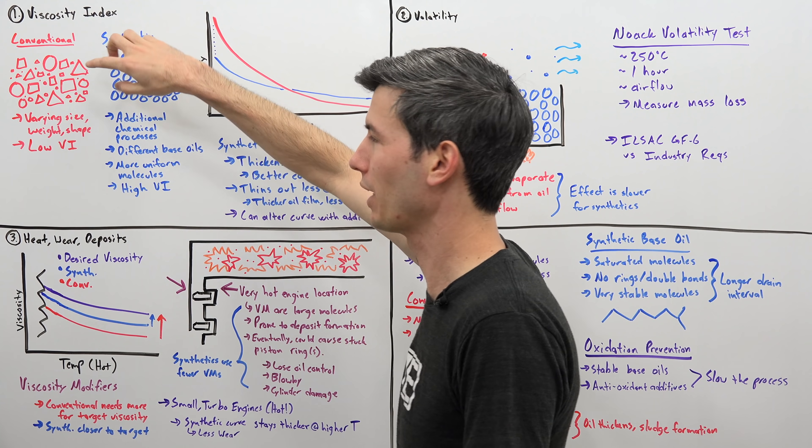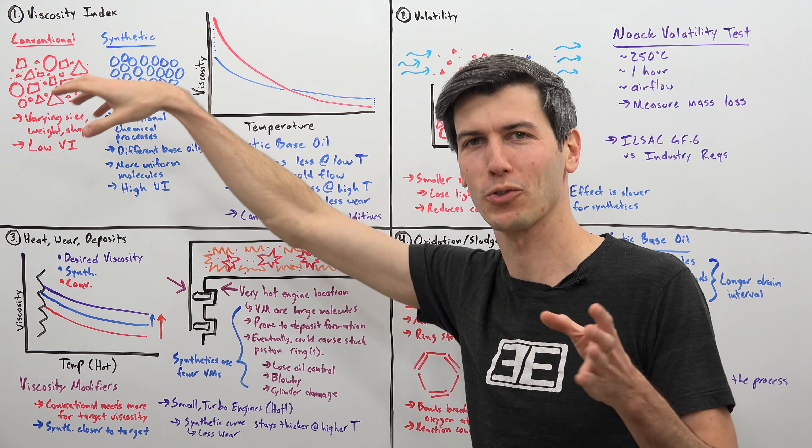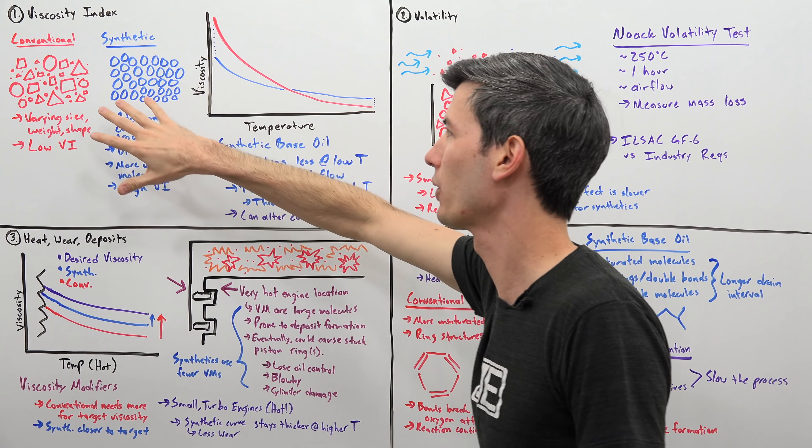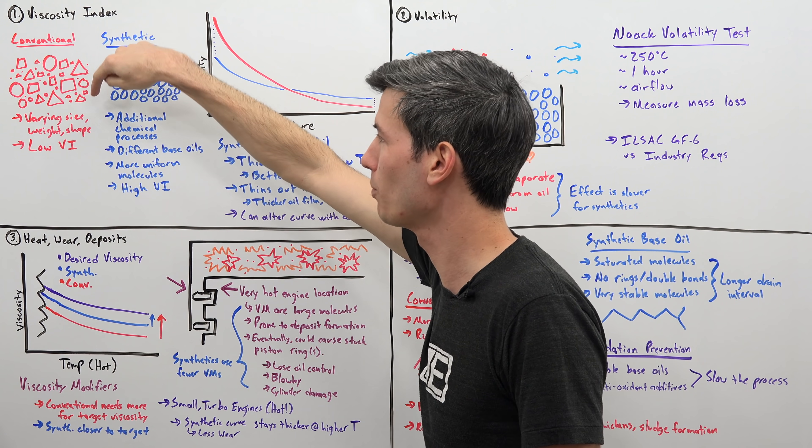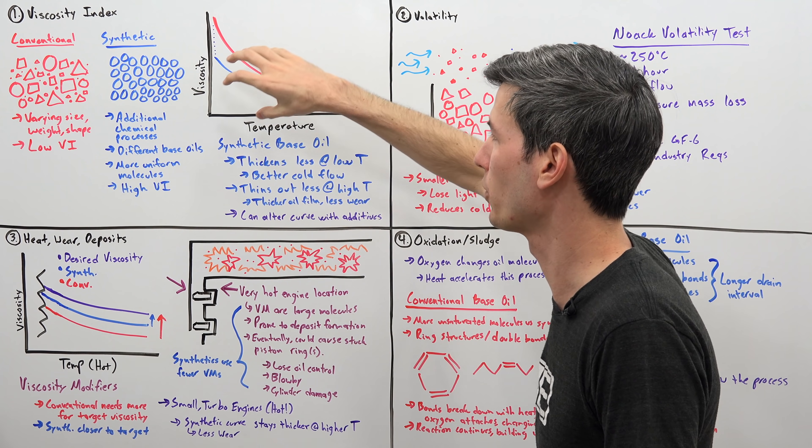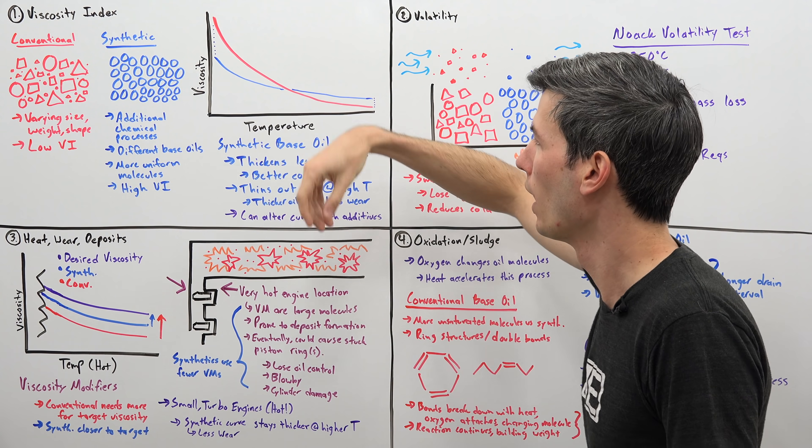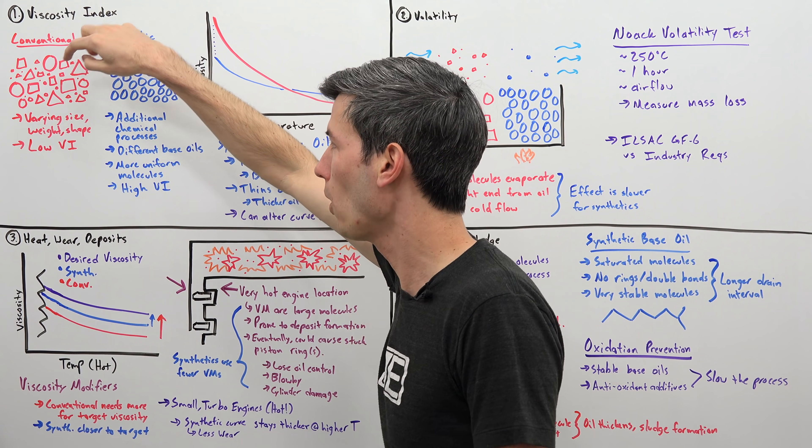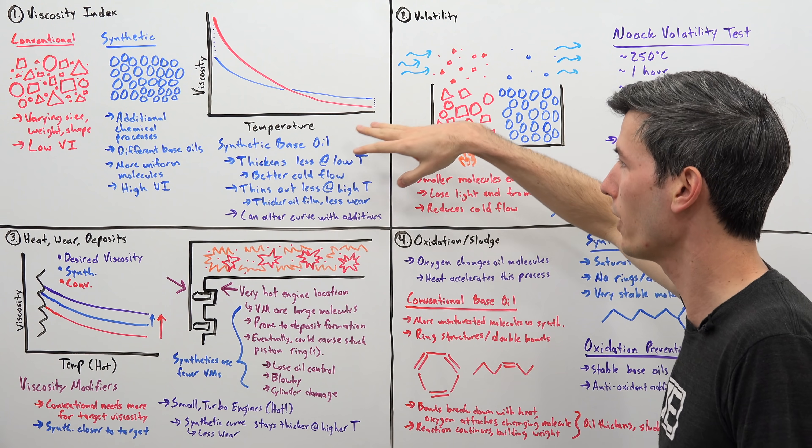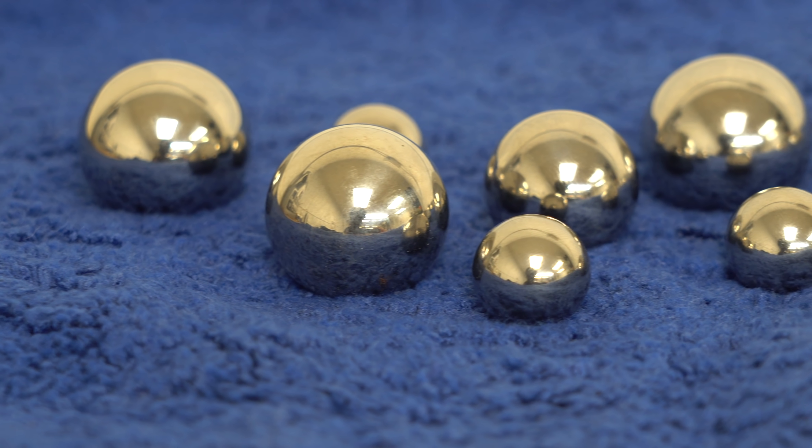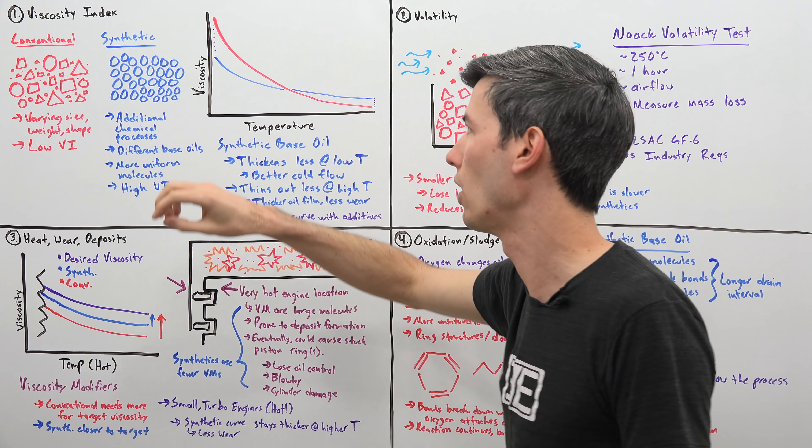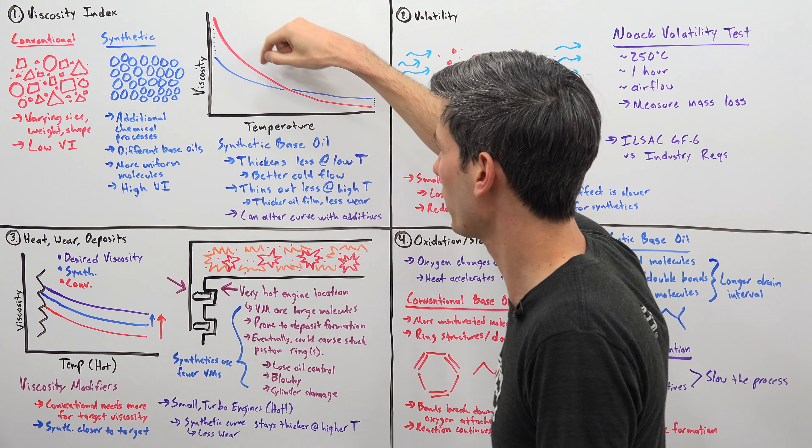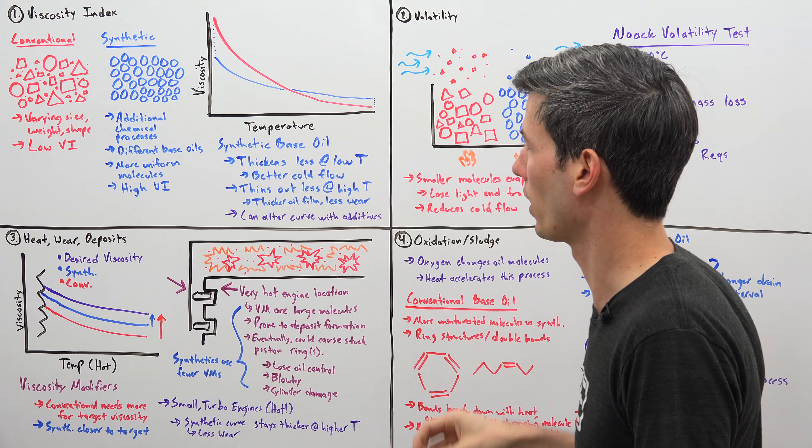If you look at the molecules that make it up, and no they're not circles and squares and triangles, just a simplified drawing, but if you look at the molecules that make it up you'll have many large molecules. At low temperatures these large molecules prevent that flow and so that causes it to be thicker. But you also have many very small molecules and so as you get to higher temperatures the abundance of all these very small molecules means that oil thins out a lot. So you have this low viscosity index where you have a dramatic change in viscosity as you change the temperature.